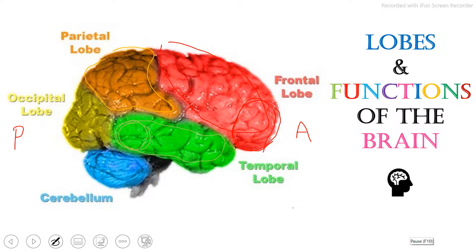The rear of the temporal lobe is what interprets emotions of others. Now back here we have the occipital lobe. The occipital lobe is the main visual information processing part of our brain. It accounts for colors, light, shapes, distance, and dimensions.